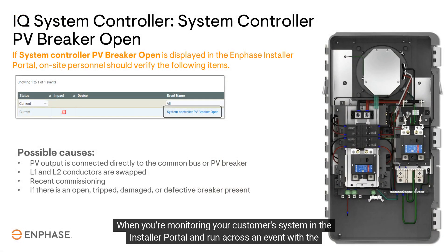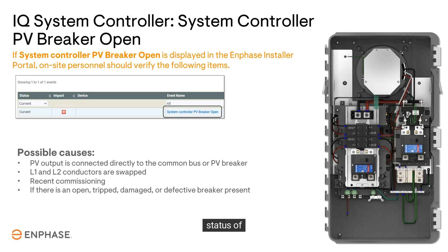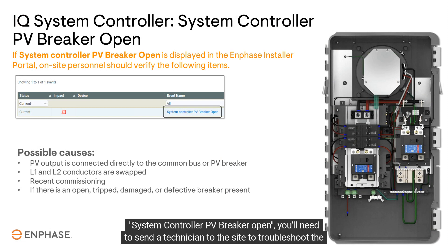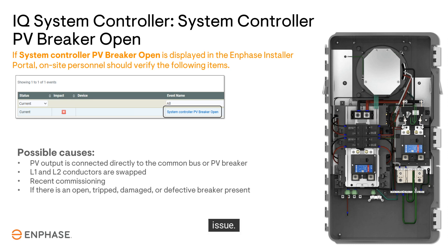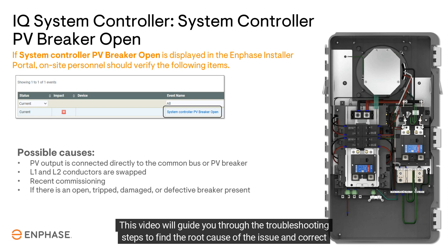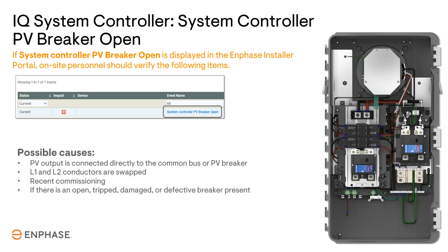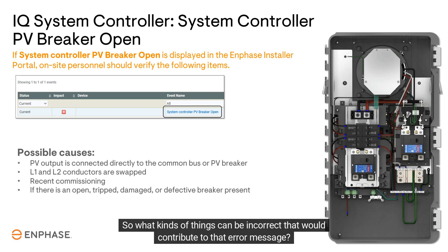When you're monitoring your customer's system in the installer portal and run across an event with the status of system controller PV breaker open, you'll need to send a technician to the site to troubleshoot the issue. This video will guide you through the troubleshooting steps to find the root cause of the issue and correct it.